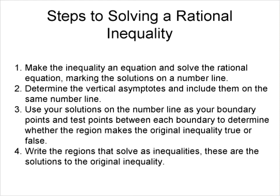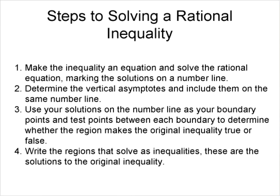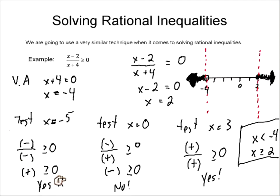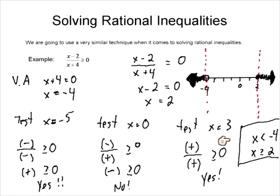Here are the steps to solving a rational inequality. First, make the inequality an equation and solve it, marking the solutions on a number line. Second, determine the vertical asymptotes and include them on the number line. Third, use these as boundary points and test points between each boundary to determine whether the region makes the inequality true or false. Finally, write the regions that satisfy the inequality — those are the solutions. It's just a four-step process.